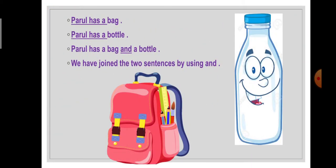One more example. Parul has a bag. Parul has a bottle. The common words are 'Parul has a.' These words we will use one time, and the rest of the words we will join with the help of AND to make one sentence. Parul has a bag and a bottle. With the help of AND, we have joined these two sentences.